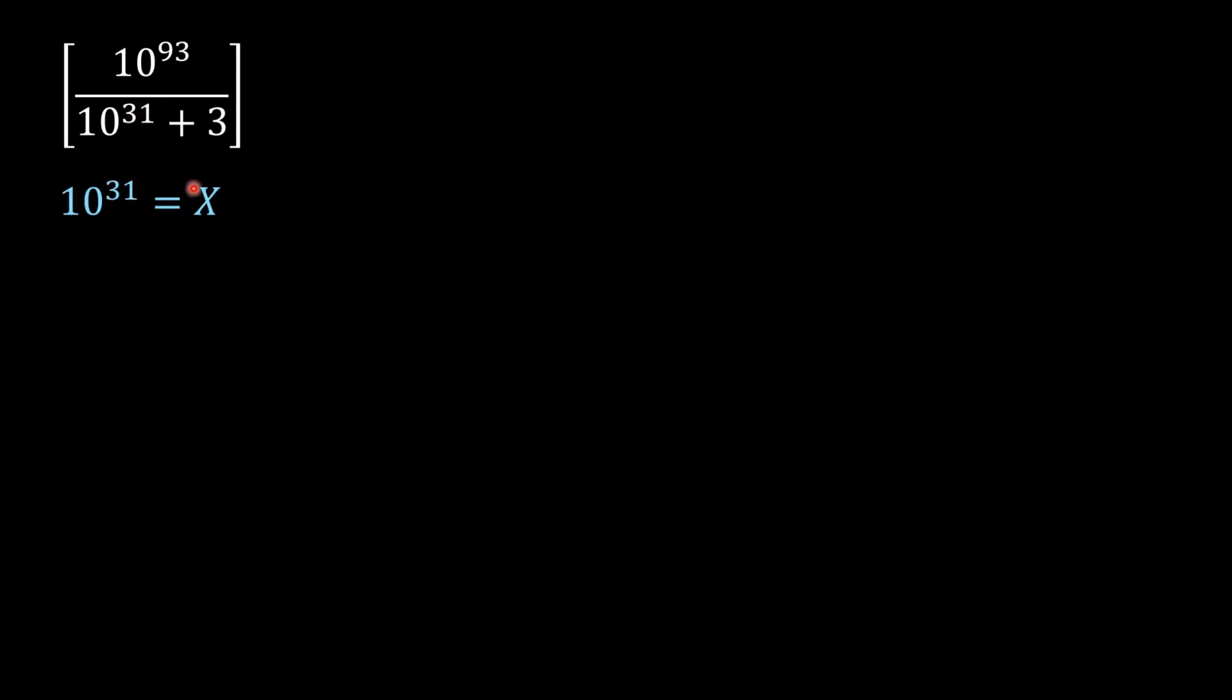If you take 10 raised to the power 31 as variable X, then this is X³. So this value becomes X³ divided by X plus 3. Now we can add and subtract some number—it will not create any difference.